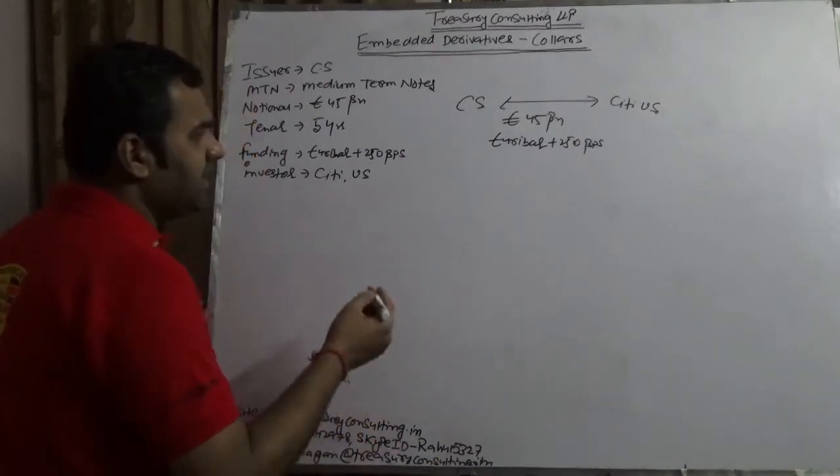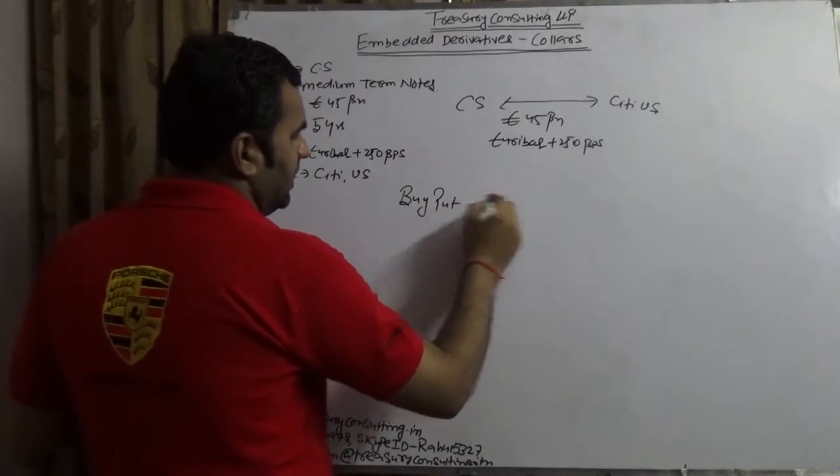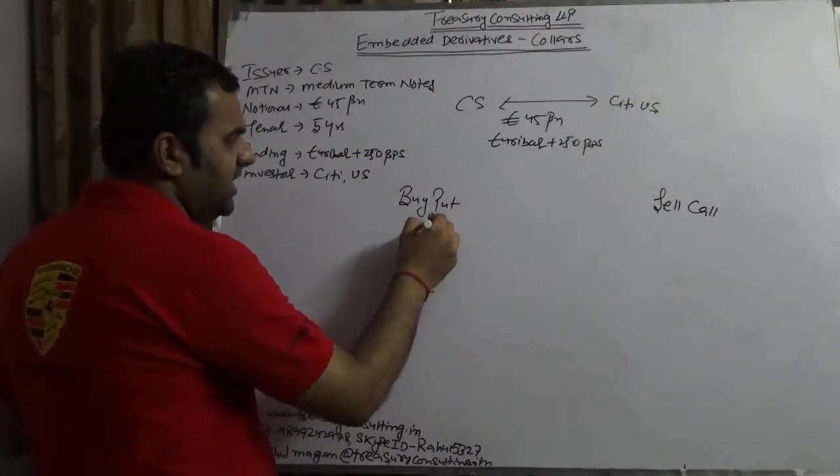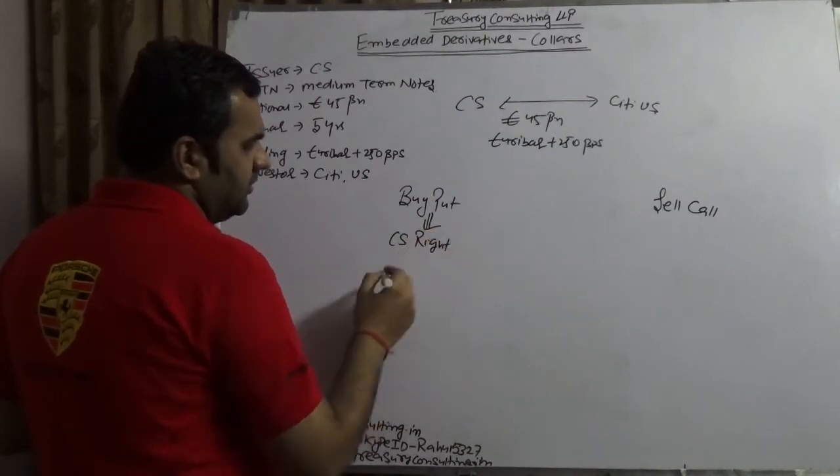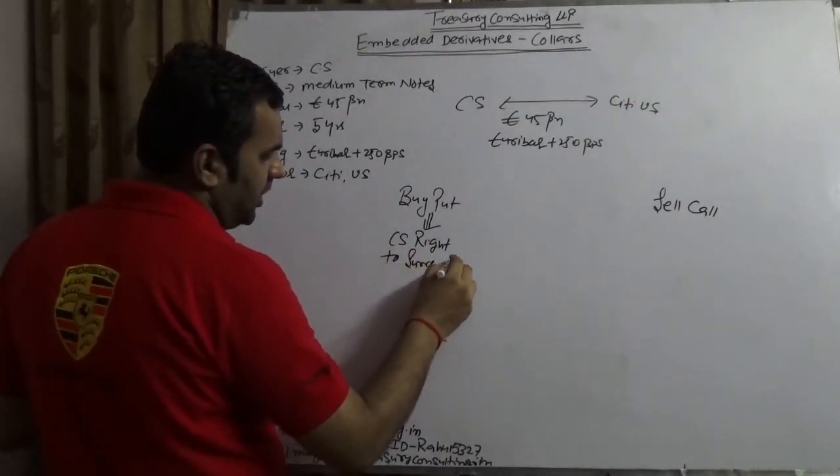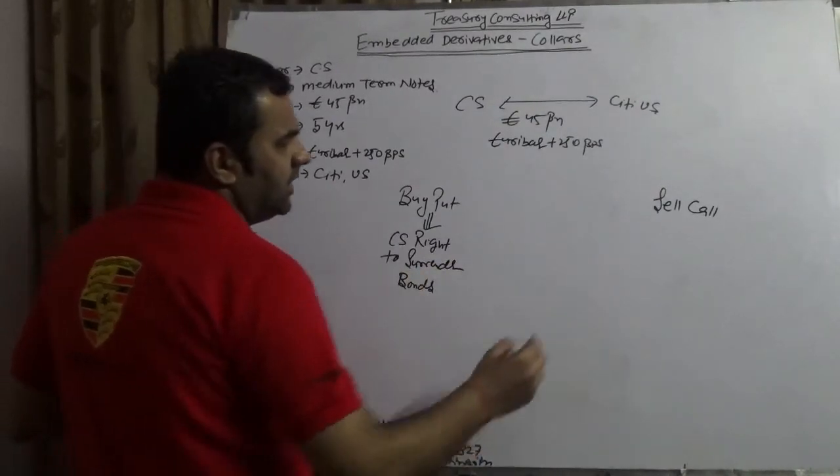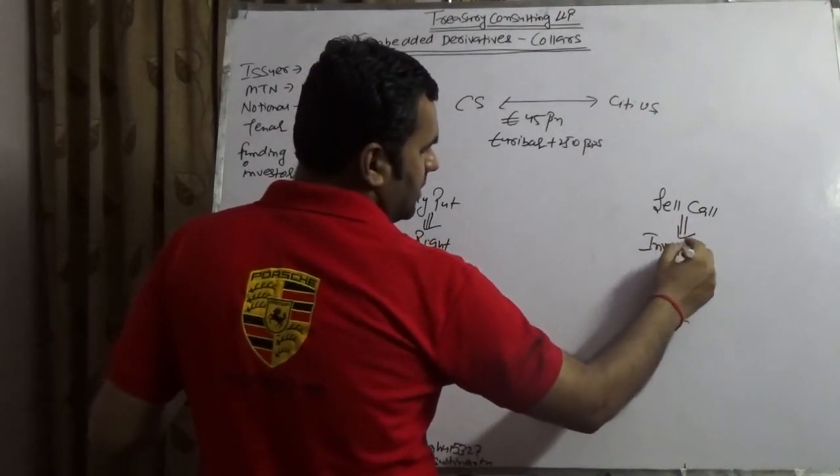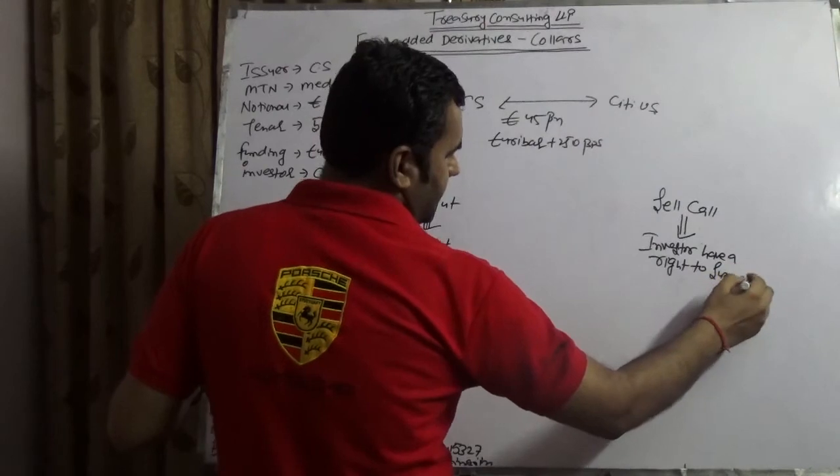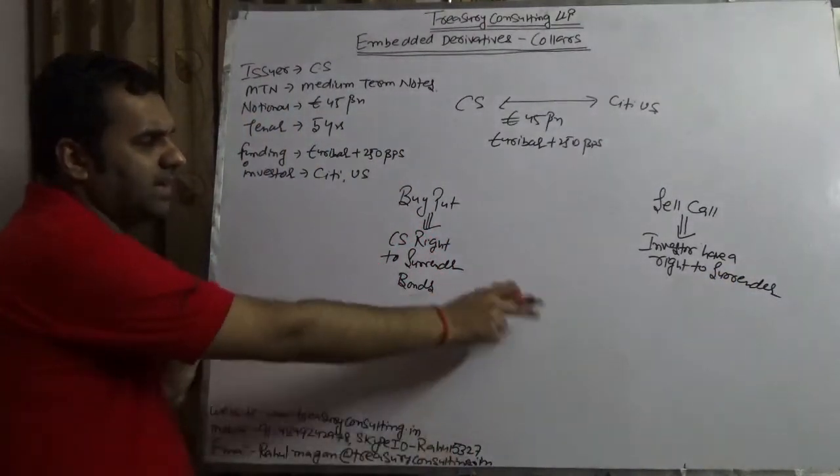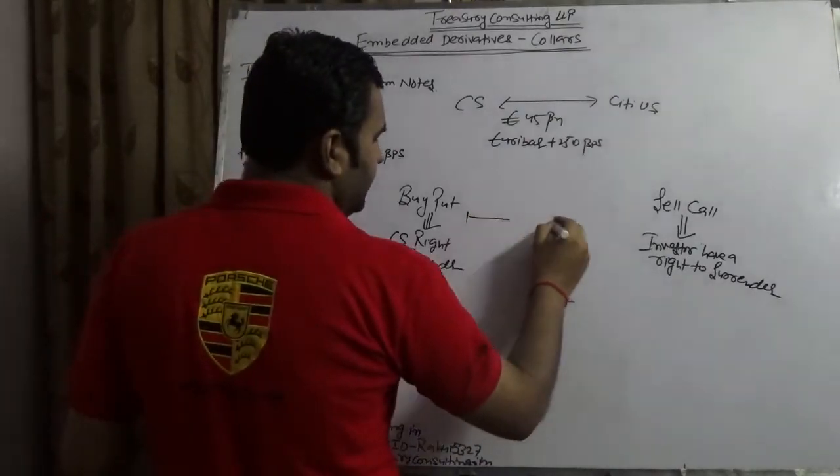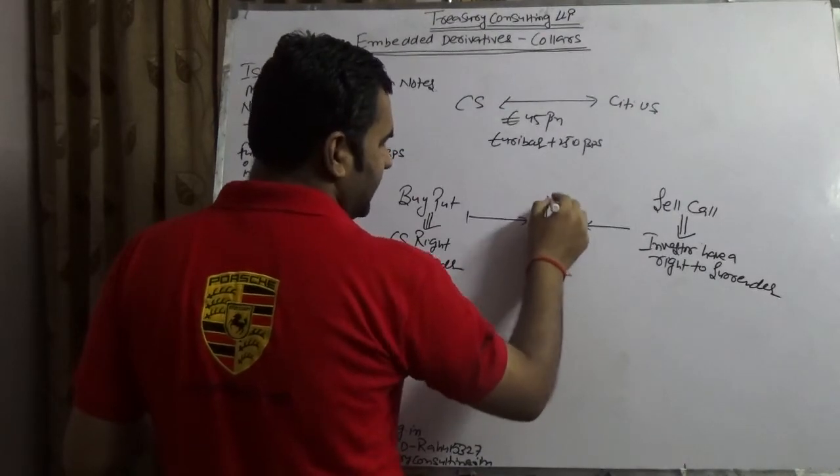So they are saying let's play a range game. Let us buy put and let us sell call. CS would have a right which is known as CS would have a right to surrender bonds and here investor would have a right to surrender. Generally in these situations we have in between is market. But there is a little catch here because this is embedded derivative collars. The catch is that of course in between is a market but here is something in technical language which is known as reflection point.